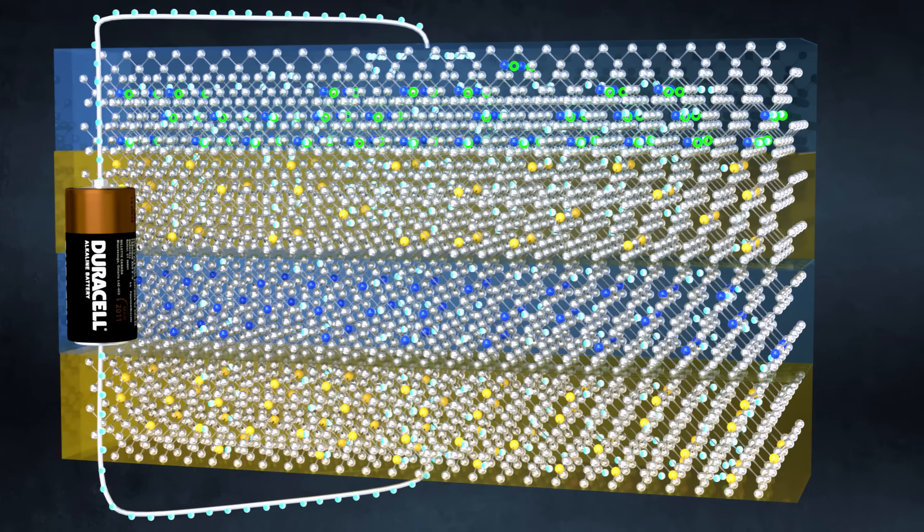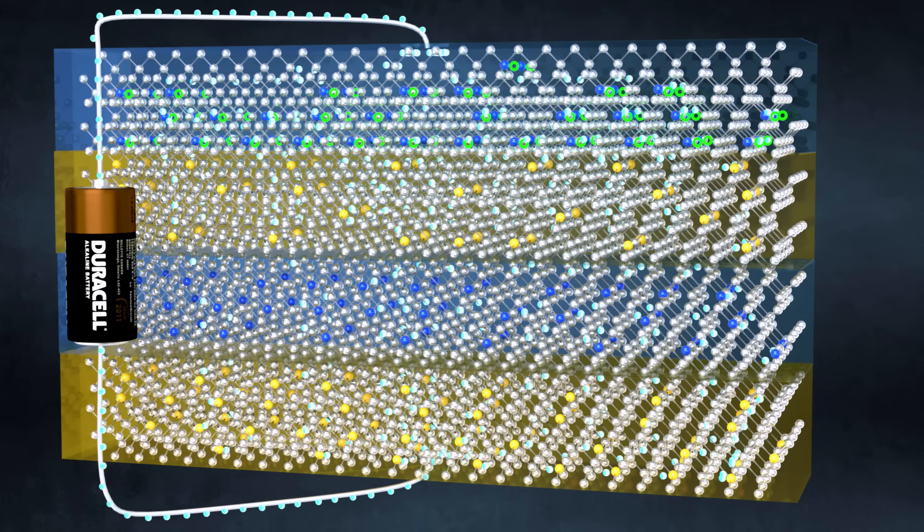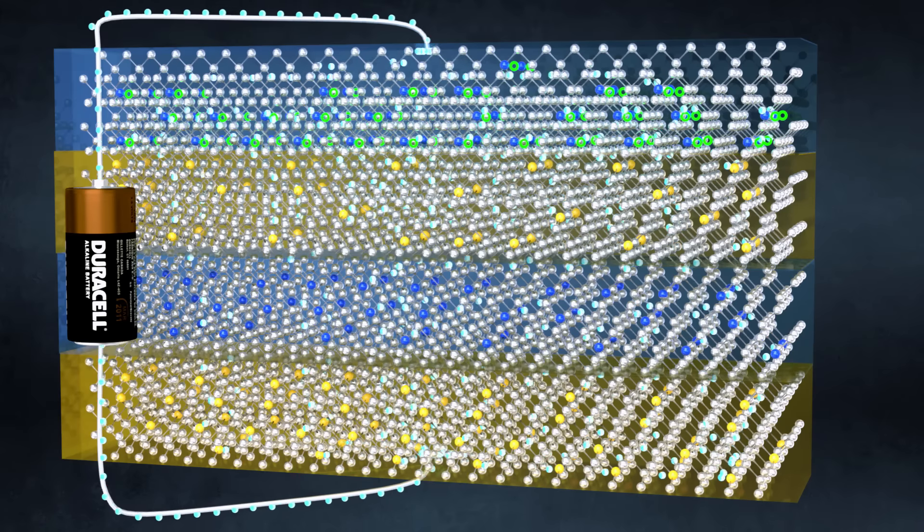This way, in the thyristor, the secondary supply voltage is needed only for the triggering. Now, let's see how we can turn off a thyristor.